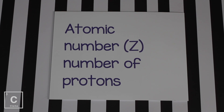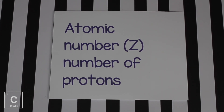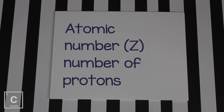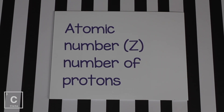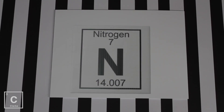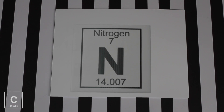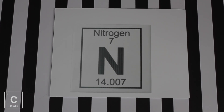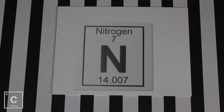Elements are identified by their name, their symbol, and their atomic number. Since the atomic number is the number of protons, the number of protons also identifies the element. Z means atomic number. If we zoomed in on one element on the periodic table — nitrogen — its symbol is N and it has seven protons, as the atomic number says.